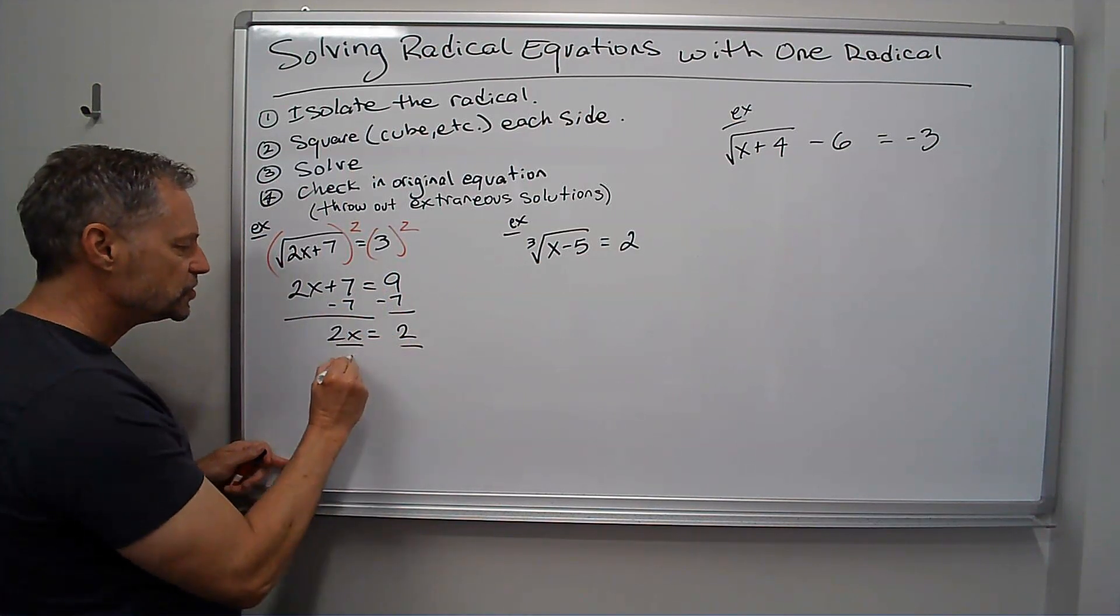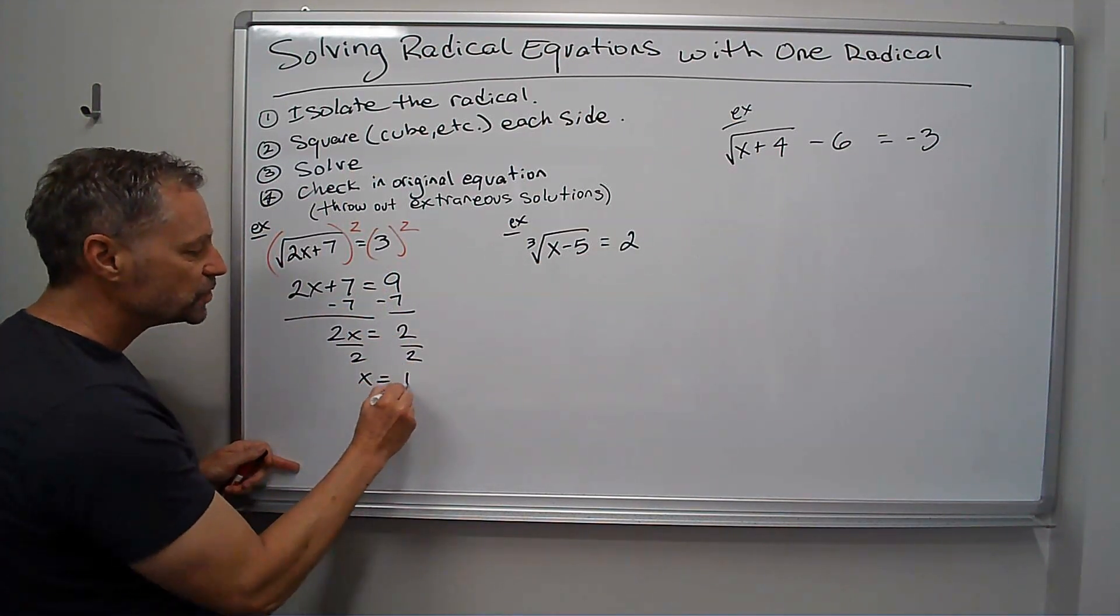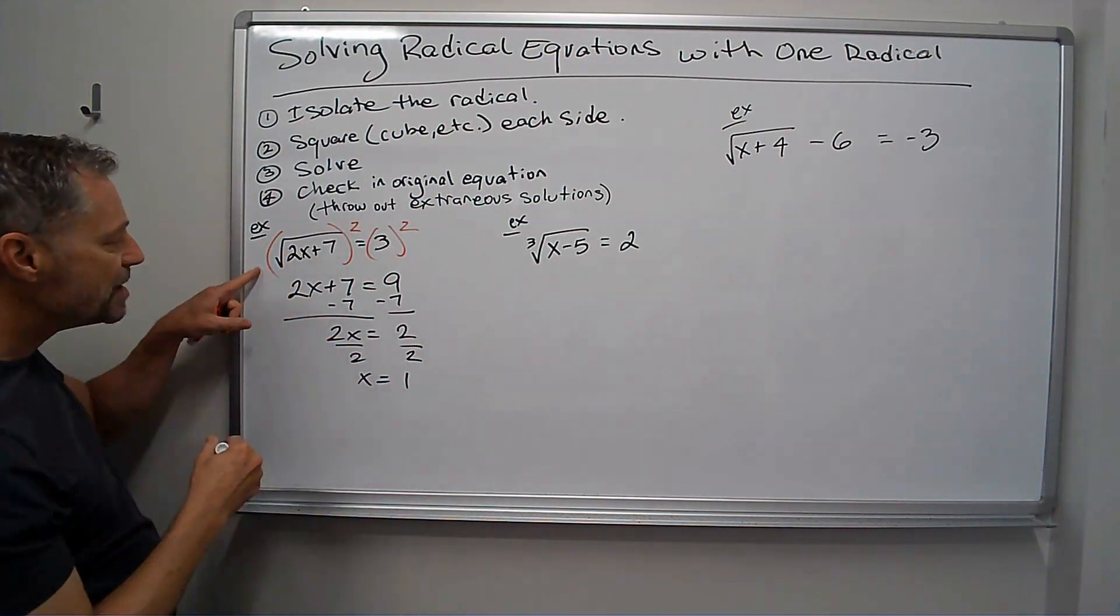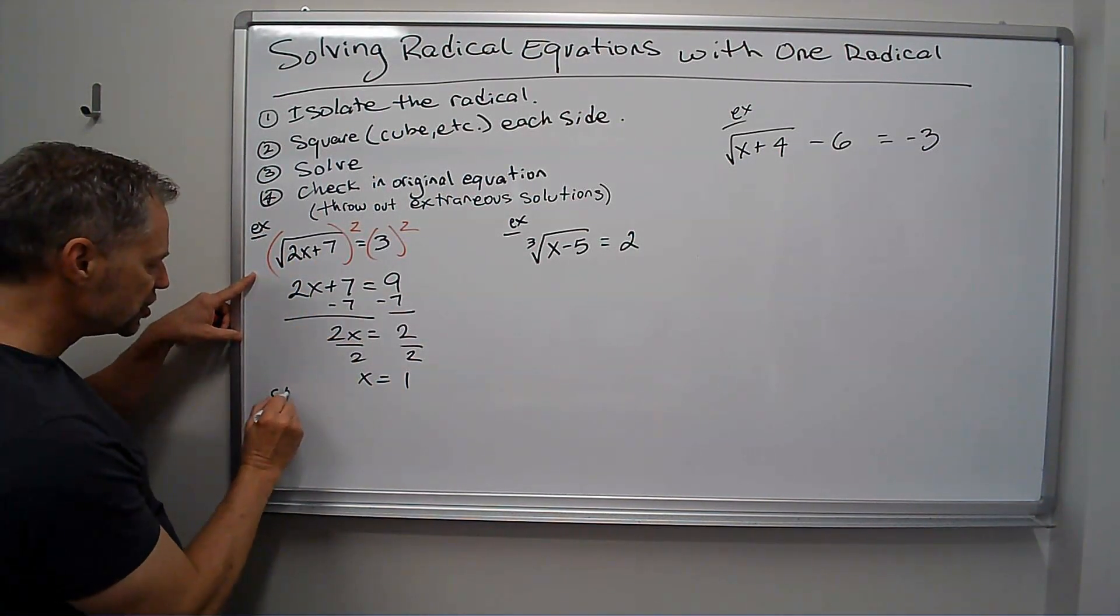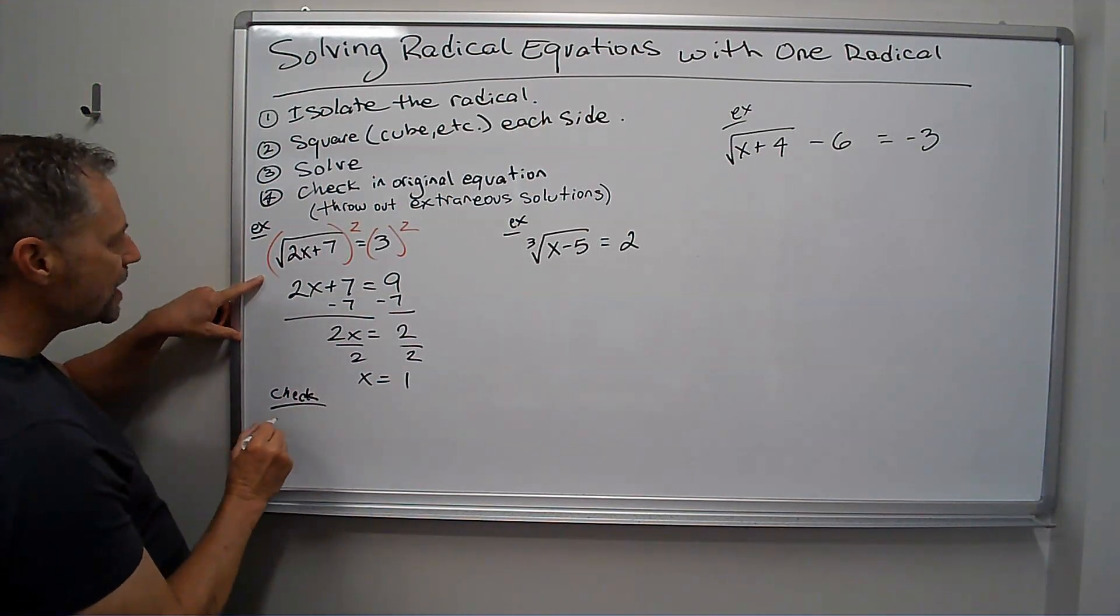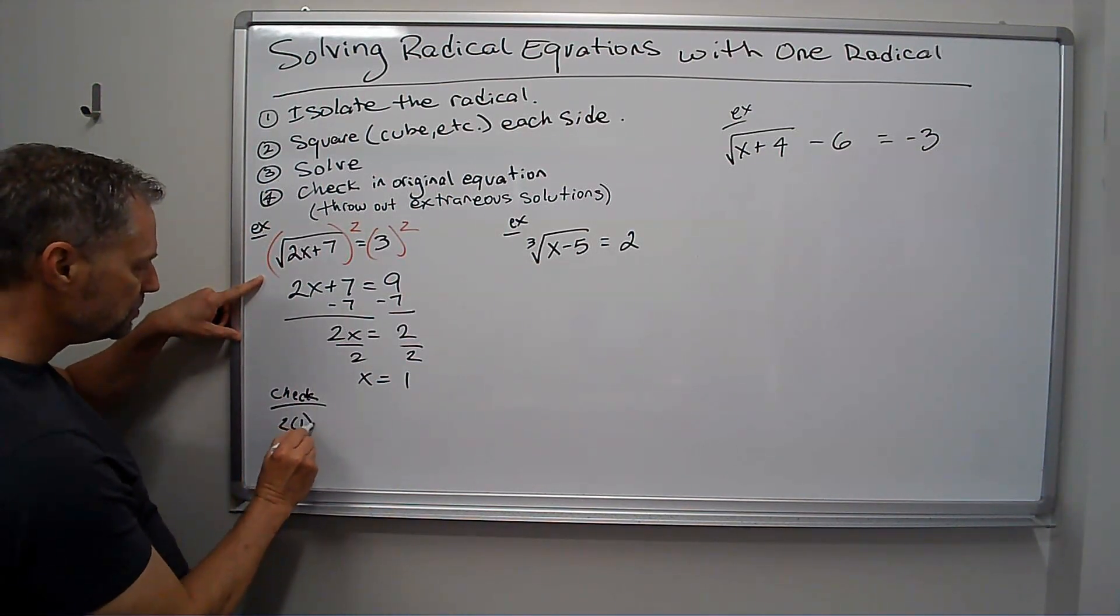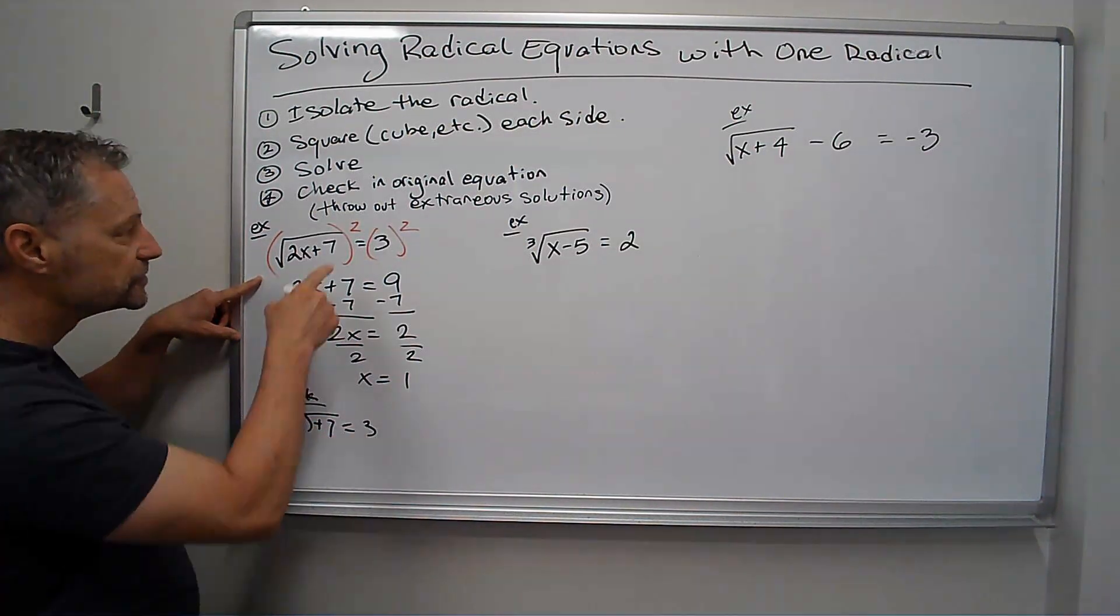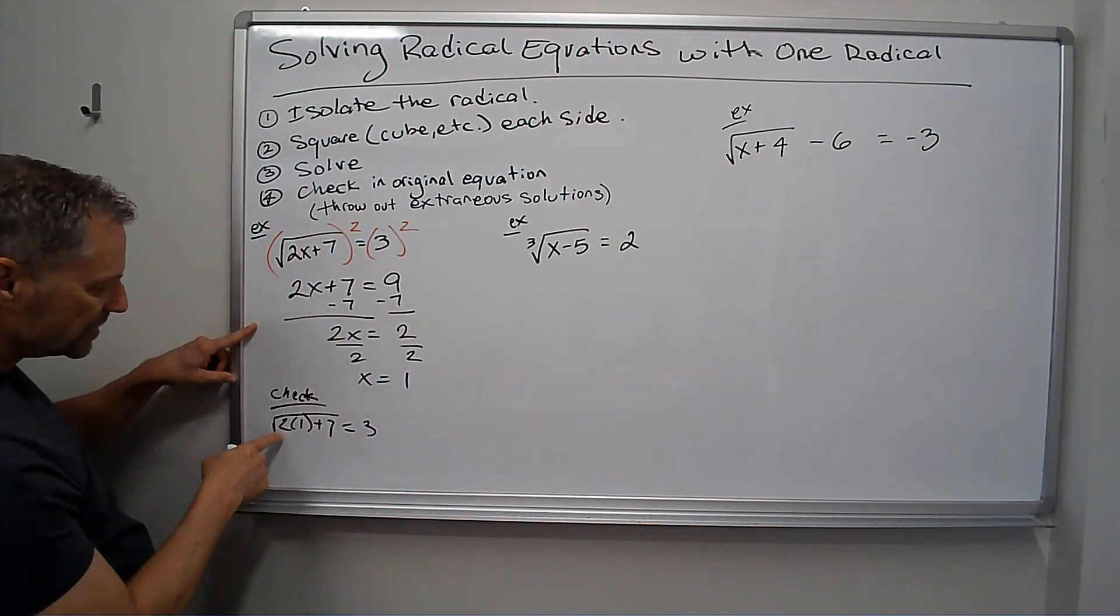2x equals 2. Divide both sides by 2. x equals 1. I think that's my answer. I just need to check it and make sure it works, in the original problem. So I'm going to check it. I go 2 times 1 plus 7, I've got that square root equals 3, before I've squared it. So let's see.